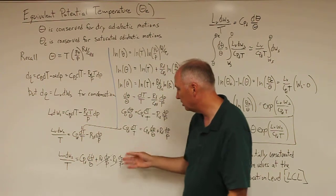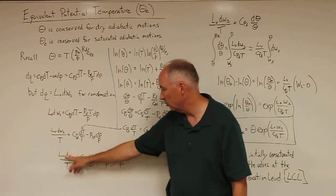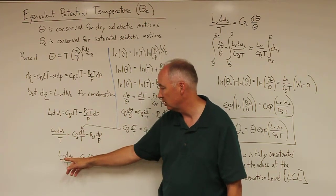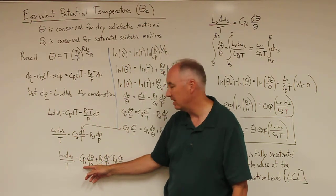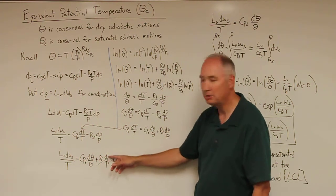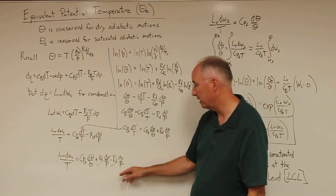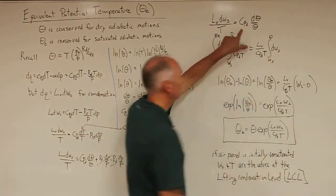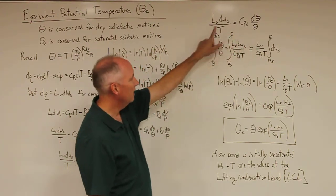Substituting that expression in and simplifying, the left-hand side becomes the latent heat of vaporization times dW_S over T, equal to C_pD times d(theta)/theta plus R_D dP/P minus R_D dP/P. Those two R_D dP/P terms cancel each other out, leaving a simplified form of the equation which we can then integrate.